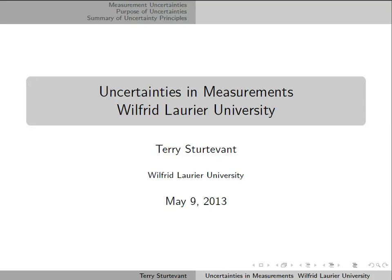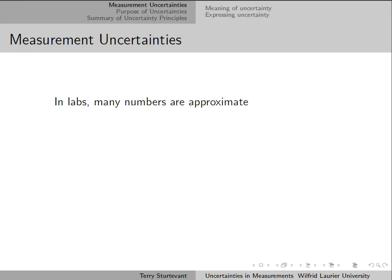This video is about uncertainties in measurements. In labs, such as physics or chemistry labs, many numbers are approximate. In other words, they have uncertainties.